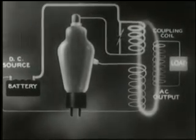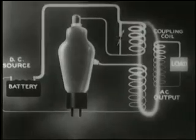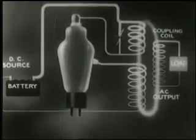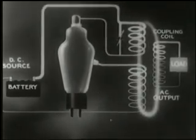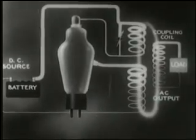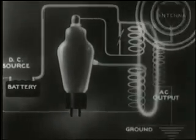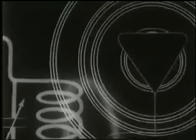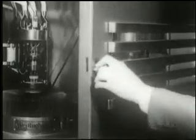Continued repetition of this feedback results cumulatively in a strong alternating current. This electronic means of generating alternating current is important because it can produce very high frequencies — up to millions of cycles — far beyond the range of ordinary rotating equipment. A familiar application of this is the radio transmitter.